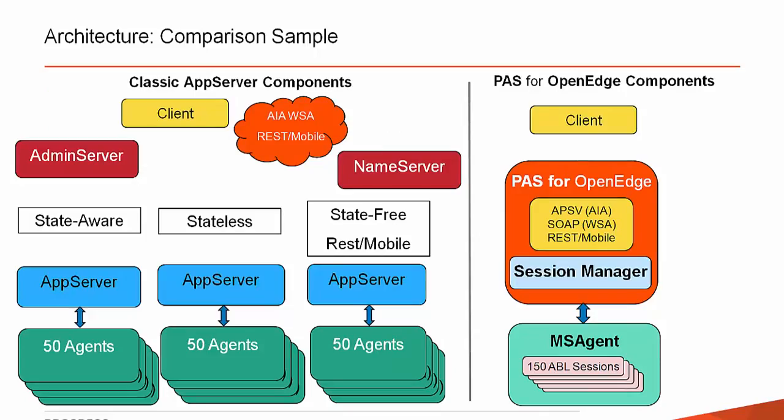Comparing classic vs. new infrastructure: with the classic setup you had to install Tomcat, three different adapters (AIA, WSA, and REST/mobile), an admin server, a name server, multiple broker processes, and 50 agents per broker — many processes to manage, with high CPU and memory usage. With the new PASoE, you have Tomcat (which already has all adapters and a session manager built in) as one process, plus one multi-session agent handling 150 ABL sessions simultaneously. This makes configuration, management, and monitoring easy, giving you more bang for your buck on a smaller machine.